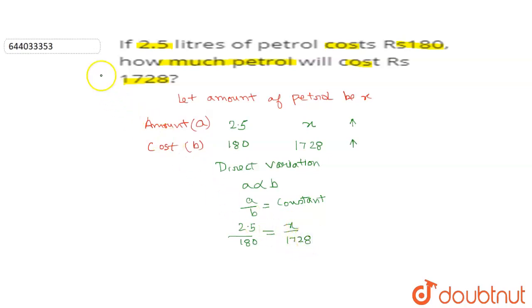Now let us solve this question to get the value of x. So your x will be equal to 1728 into 2.5 divided by 180. If I solve it then it is 1728 into 25 divided by 1800. Now let us cancel it by 5 so here we will get 360.